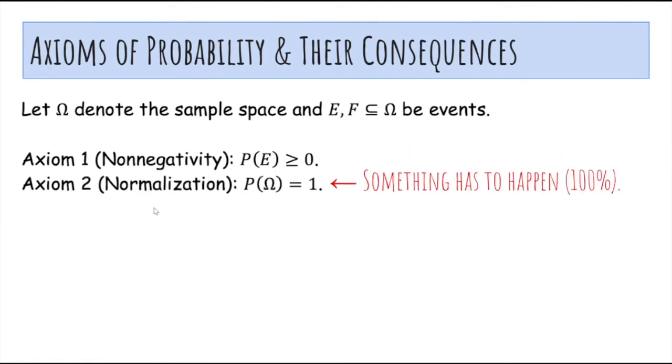The second axiom, normalization, says that the probability of the entire sample space should be 1. In other words, something has to happen with 100% probability.